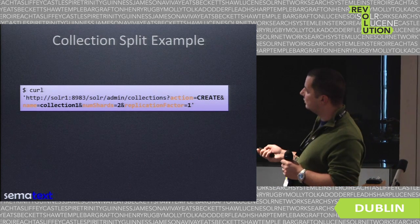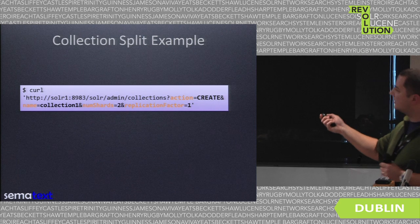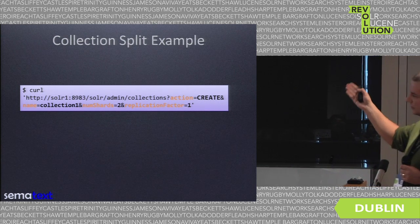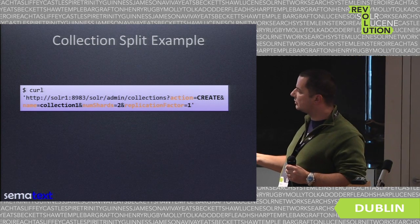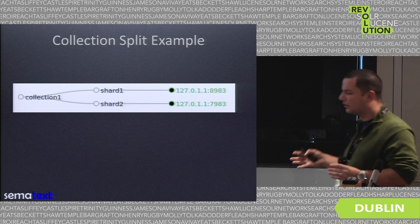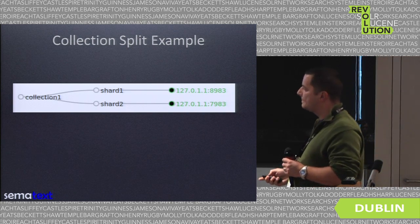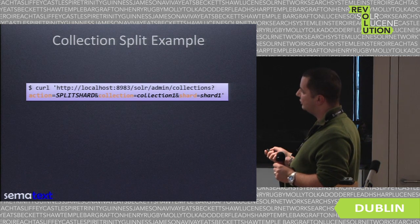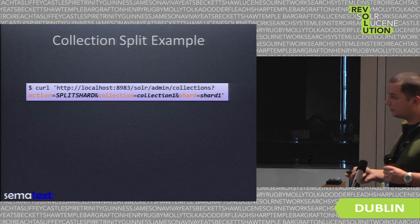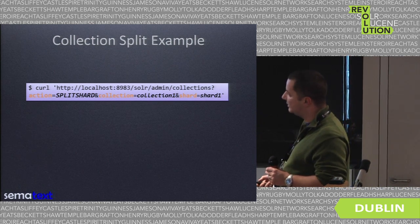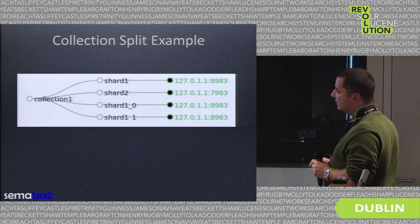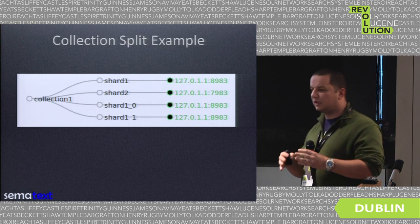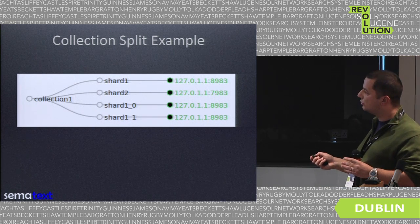Solr gives us the possibility of splitting the shards of an already created collection and dividing a single shard into two. Let's start with a simple example: create a collection with two shards. After running the command, you can see in the SolrAdmin cloud view that we have collection1 with two shards, placed on the same machine but on different Solr instances. After running the split shard command — specifying the action as split_shard, the collection name, and which shard to divide — our collection will look different. We still have shard1 but it's empty, shard2 is untouched, and we have two additional shards: 1.0 and 1.1.